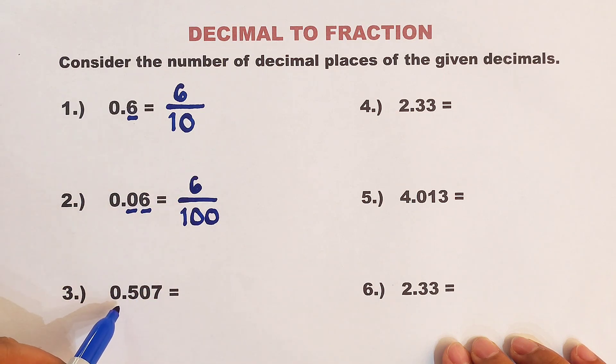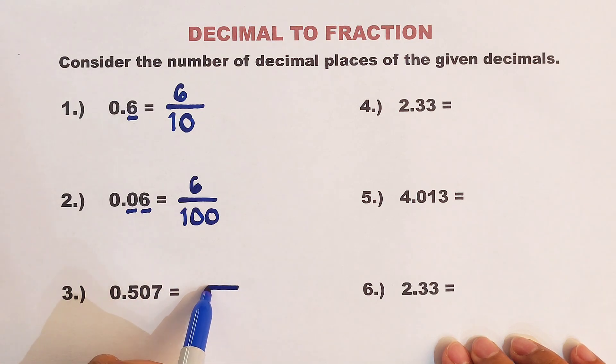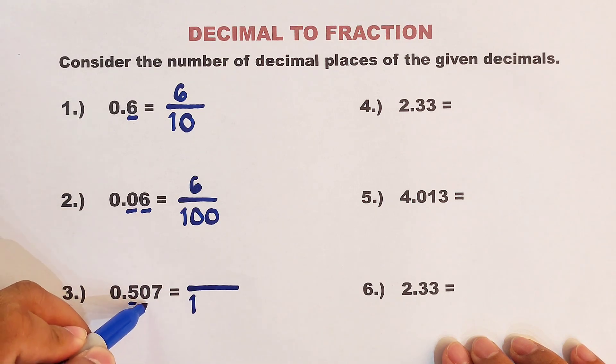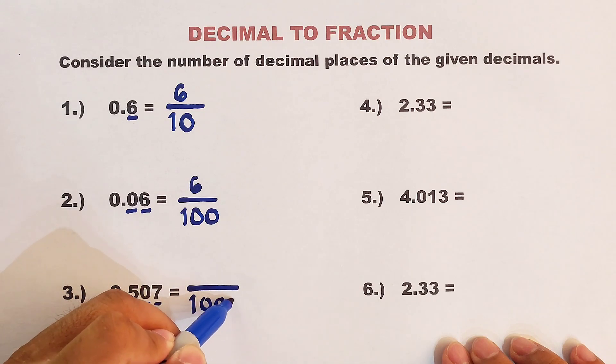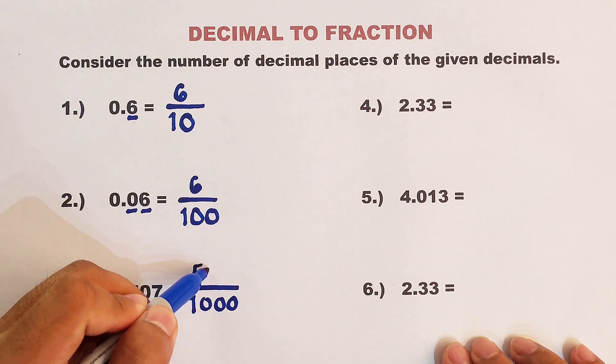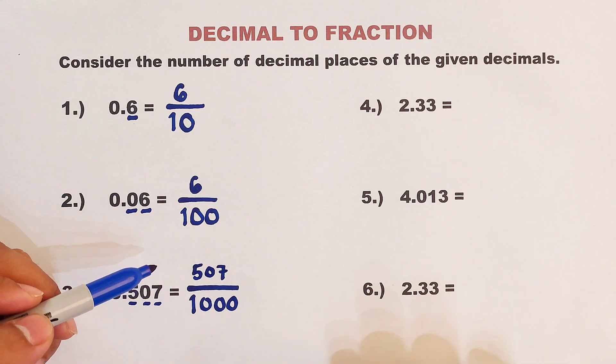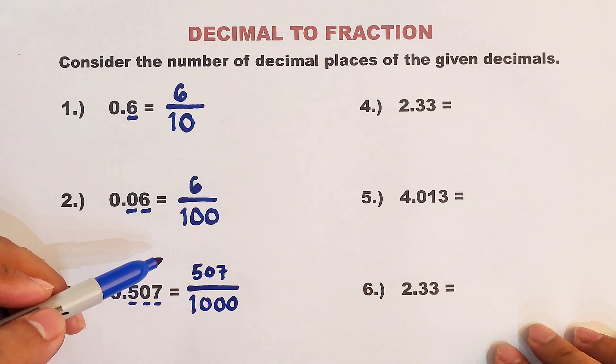Now let's move on with item number 3. I will put here the bar sign and then the 1. And now, let's count the decimal places. We have 1, 2, 3, so we put 3 zeros, meaning our denominator is 1,000. After that, we copy this number 507, meaning the fraction is simply 507 over 1,000.